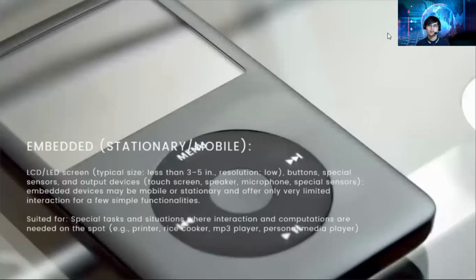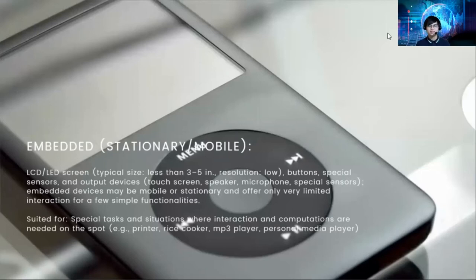We also have embedded, stationary, or mobile devices — such as MP3 players with LED screens. These have a typical size of less than 3 to 5 inches with special embedded components, offering only very limited interaction for a few simple functionalities. They are suited for special tasks and situations where interaction and computation are needed on the spot. Examples include printers, rice cookers, MP3 players, and personal media players.